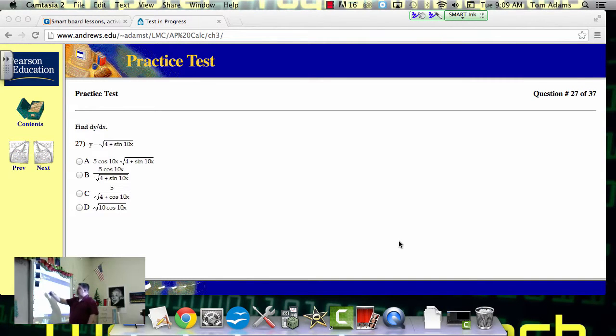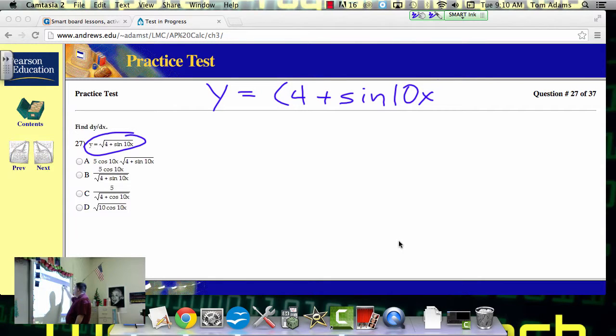All right, so now for this one, I'm going to rewrite this a little differently. I'm going to say y is equal to 4 plus sine of 10x raised to the one half. Okay?